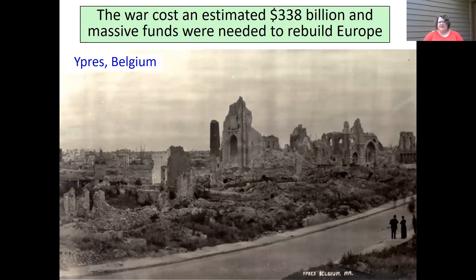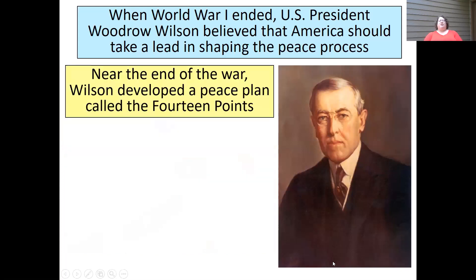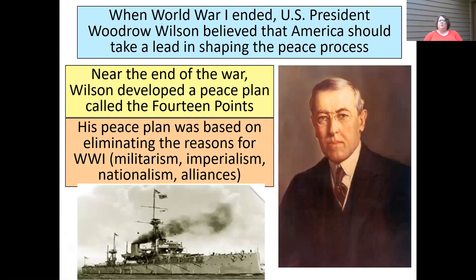Woodrow Wilson, the president of the US at the time, wanted to take a lead in shaping what was going to come next — the peace process. He developed a plan called the 14 Points: 14 ideas that he wanted to put into place as part of the peace process. He wanted to get rid of the main reasons for the war — the rampant militarism, imperialism, nationalism, and all the conflicting alliances that led to the chain reaction that started World War One.